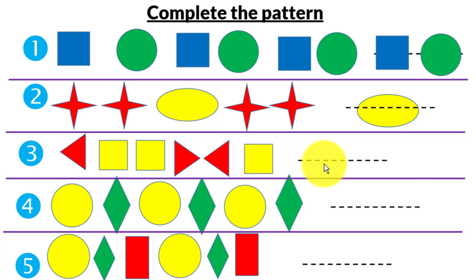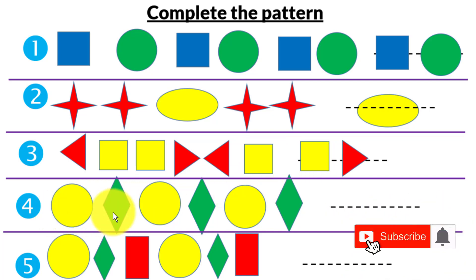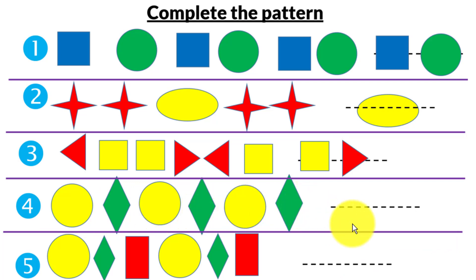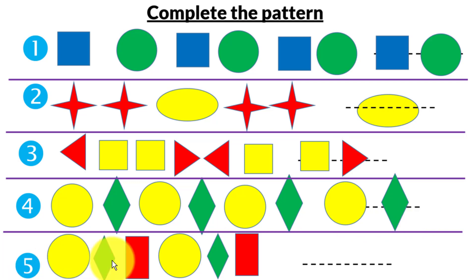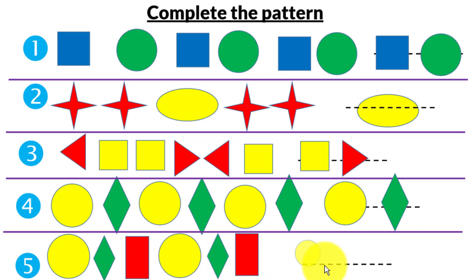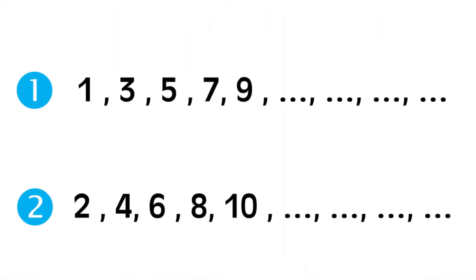Number four: circle, diamond, circle, diamond, circle, diamond — circle-diamond is repeated so it will be circle, diamond. Number five: circle, diamond, rectangle — it will be repeated again: circle, diamond, rectangle. The missing piece is circle, diamond, rectangle.